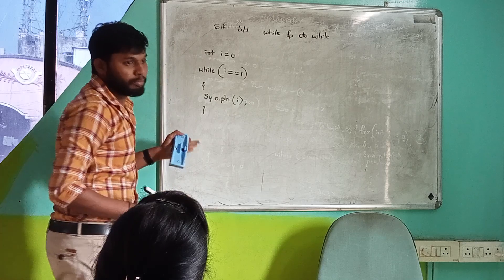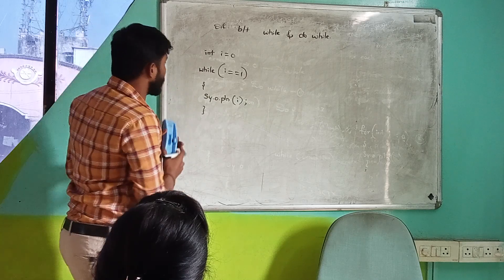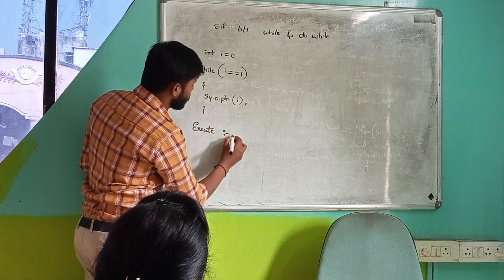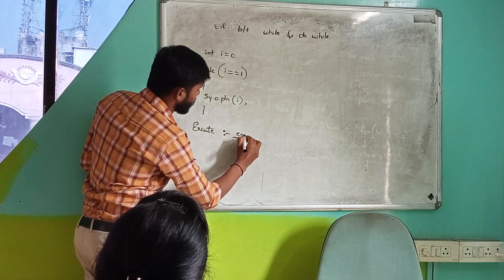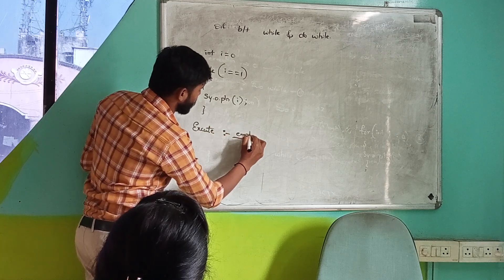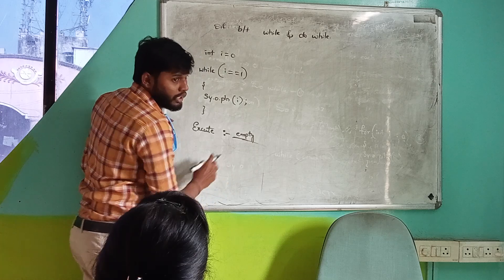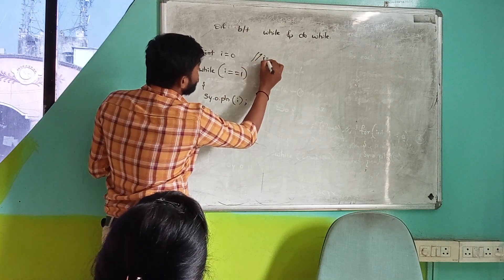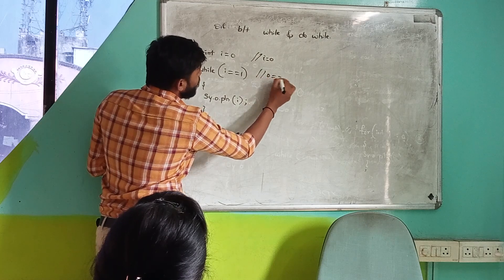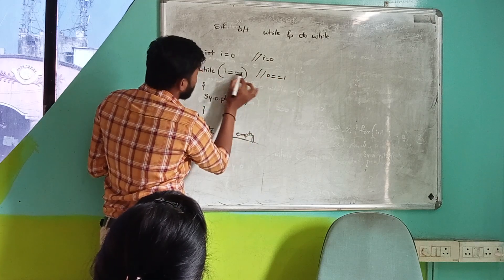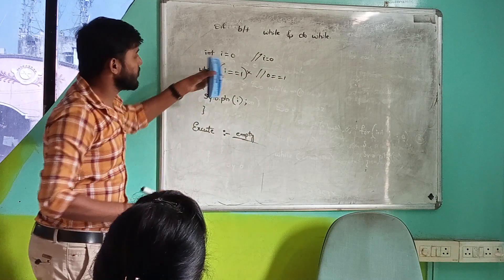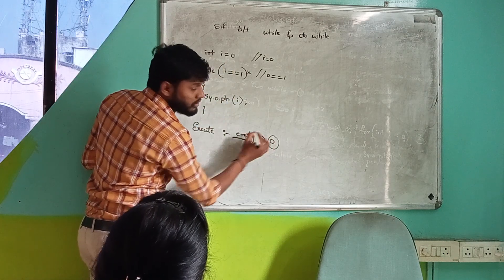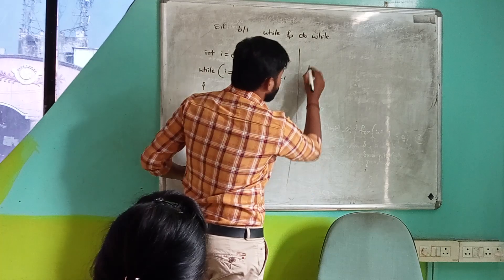Inside the while loop, I'm printing the i value using System.out.println. It will execute empty — meaning it won't execute at all — because the i value is zero and zero is not equal to one, so the condition is not satisfied. That's why the minimum execution of while is zero.